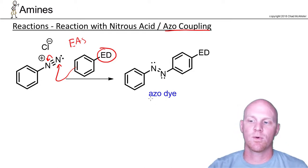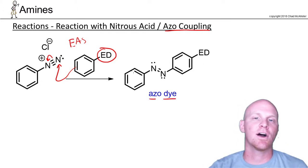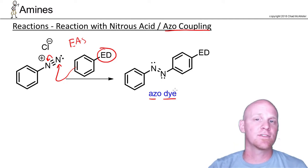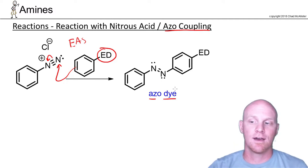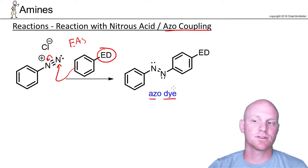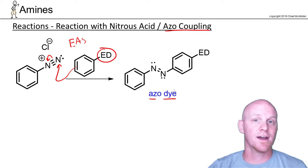This is what we call an azo dye. It's a highly conjugated system, and as we've studied, the more conjugated the system, the longer the lambda max. In this case, they're usually long enough to show up in the visible spectrum, making this a good azo dye.